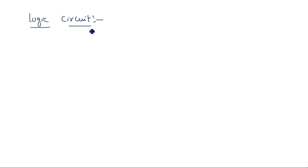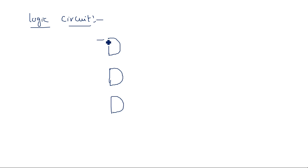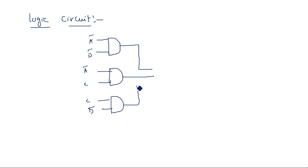For this expression, we can draw the logic circuit using AND and OR gates — an AND-OR-Invert style circuit. We use three 2-input AND gates for Ā·D̄, Ā·C, and C·D̄, and the outputs of these three AND gates are fed into one OR gate to produce output Y.